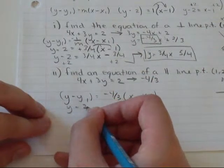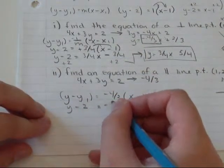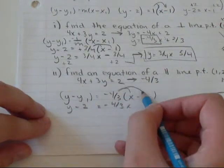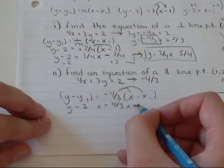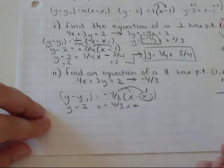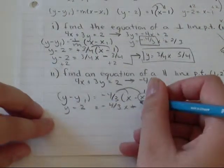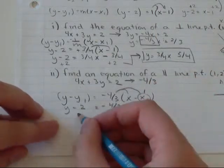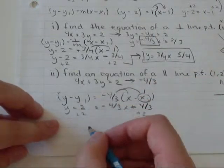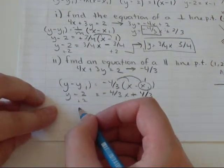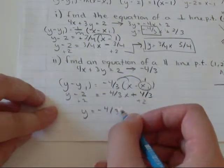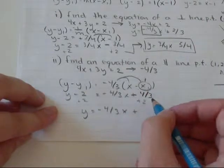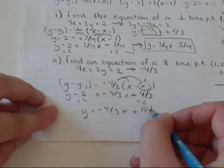I know that y minus y1 equals negative 4 thirds x minus x1. y minus 2 equals negative 4 thirds x minus and minus. So, plus...oh, this was 1. I guess I should have mentioned that. Plus 4 thirds. I'm going to add 2 to both sides. y equals negative 4 over 3 x plus...I've already done 4 thirds plus 2. 10 over 3.